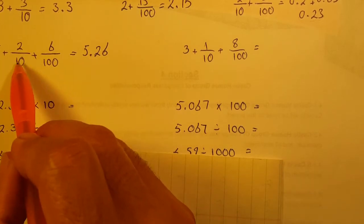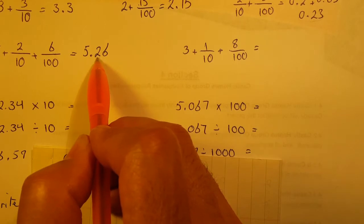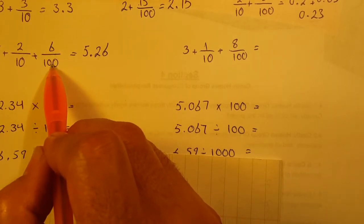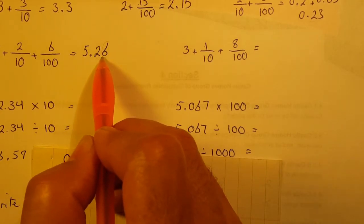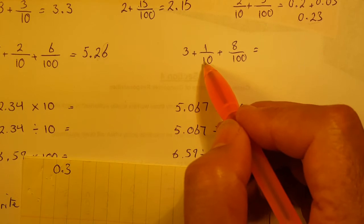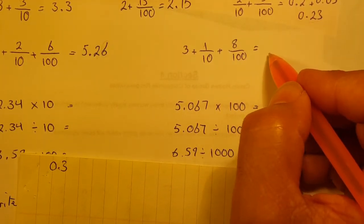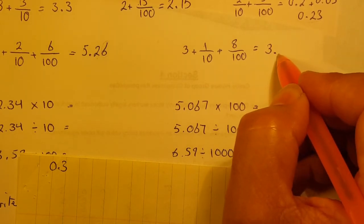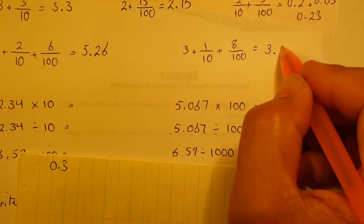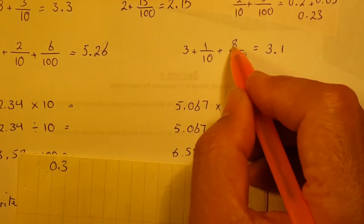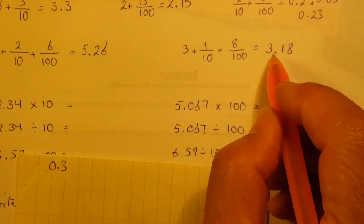5 is the whole number, 2 over 10 means group tenths so 2 is in the tenths place, and 6 over 100 is in the hundredths place, so 5.26. For 3 plus 1 tenth plus 8 over 100: 3 is the whole number, 1 over 10 is the tenths group, and 8 over 100 is in the hundredths place, so the answer is 3.18.